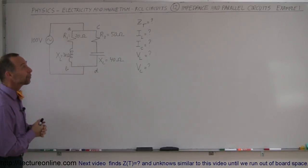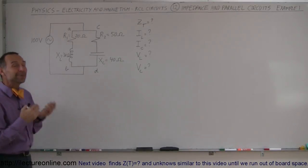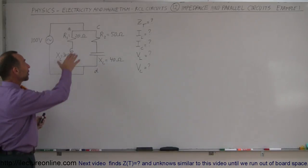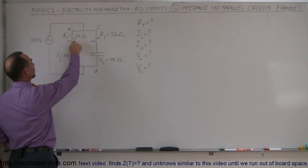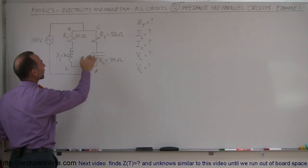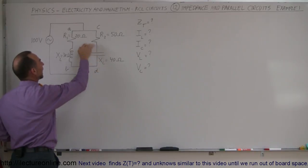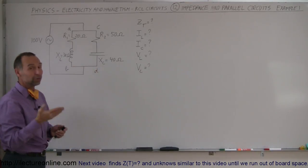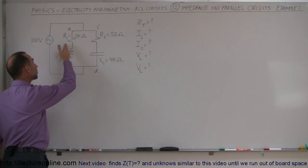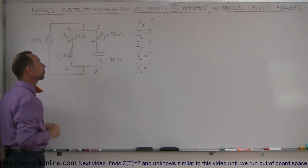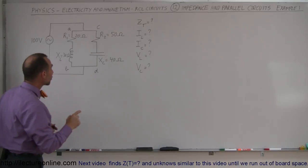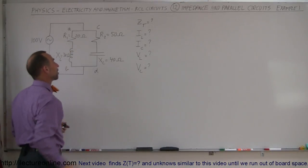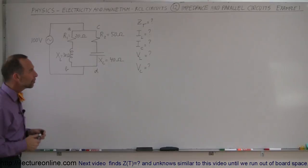Welcome to Electra Online. We're going to find the impedance of a parallel circuit. We took a simple circuit with just two branches. On the left branch we have an inductor and a resistor. On the right branch we have a capacitor and a resistor. We have to find the impedance, the current — which will be different in the left and right branches — and the voltage drop across the inductor and the capacitor.